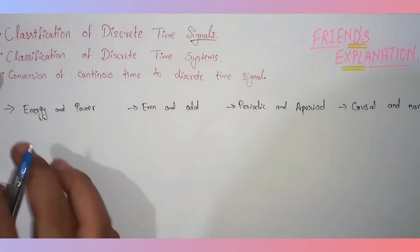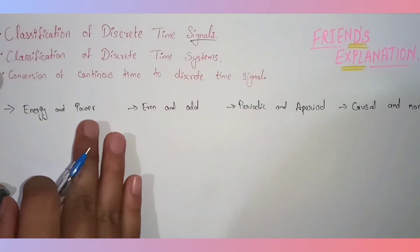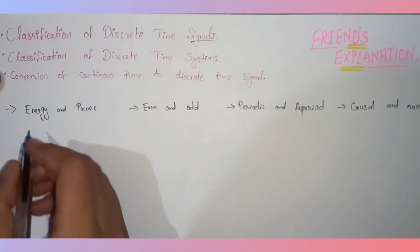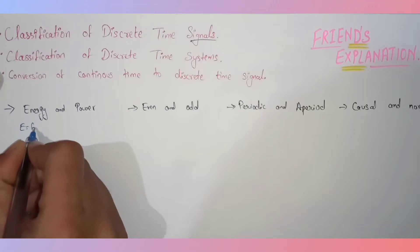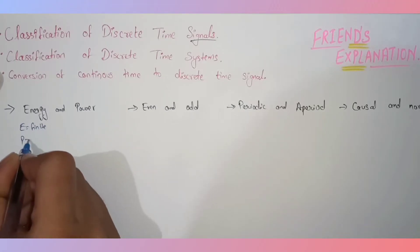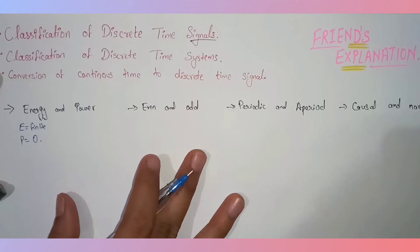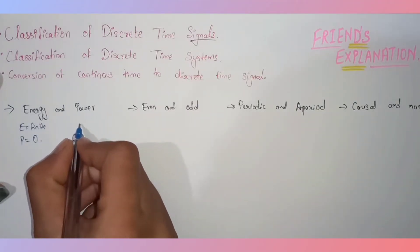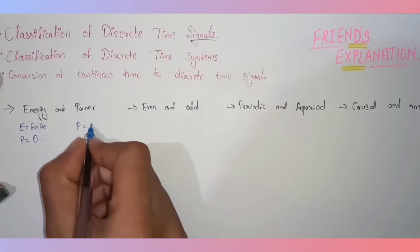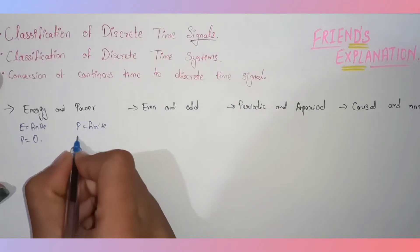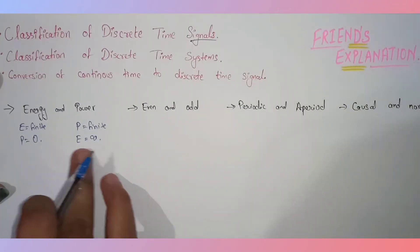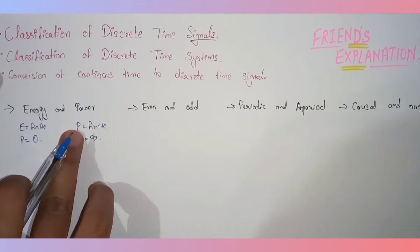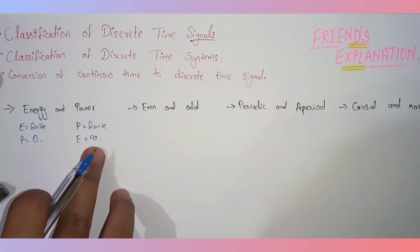A signal is said to be an energy signal if and only if the signal energy is finite and the power is zero — that means energy equals finite and power equals zero. It is a power signal only if it has finite power and energy equals infinity. So a signal is a power signal if and only if power is finite and energy is infinity.